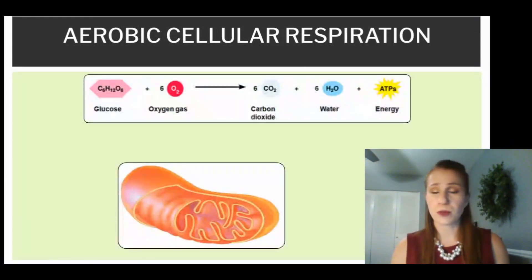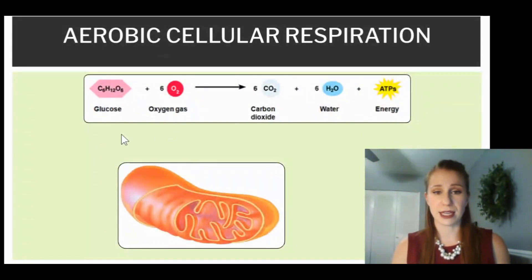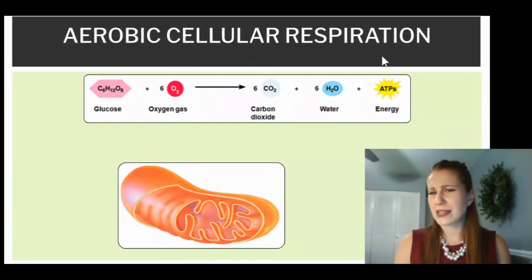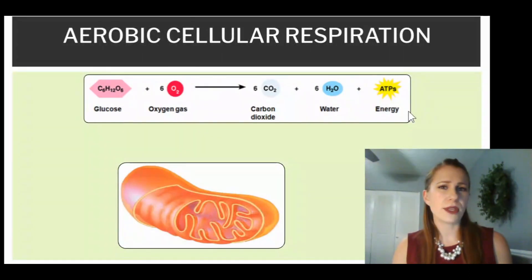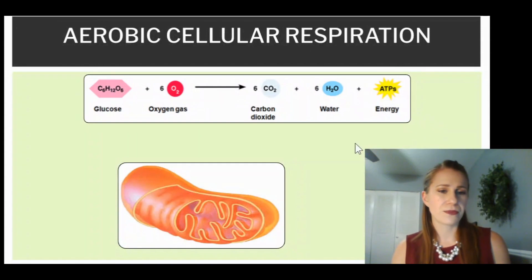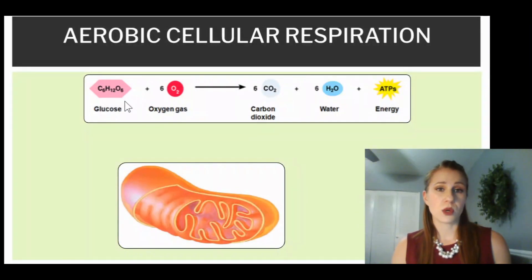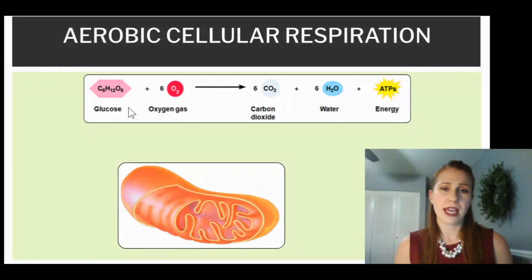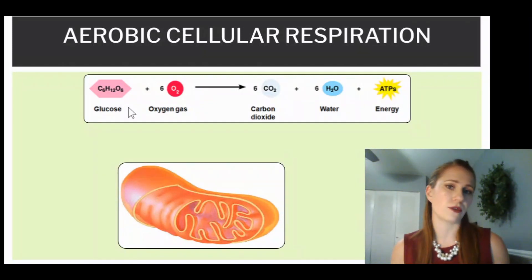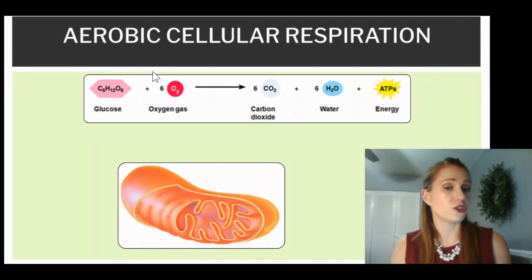So aerobic cellular respiration — the equation looks like this, and it looks very similar to the equation for photosynthesis that we talked about in a previous video. We have glucose, C6H12O6 — that comes from our food. We take food into our body, break it down to the bare parts into glucose, because our cells can use glucose to make energy. We have six molecules of oxygen gas.